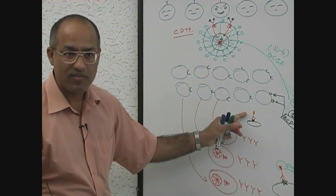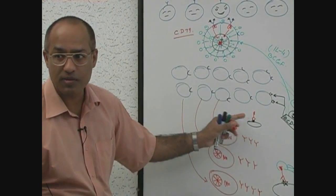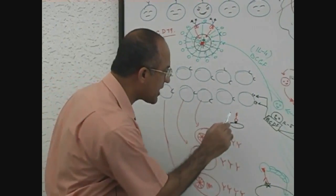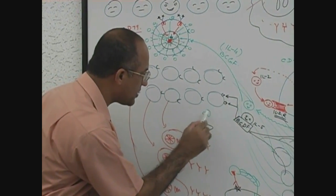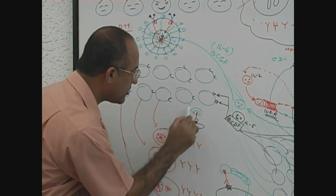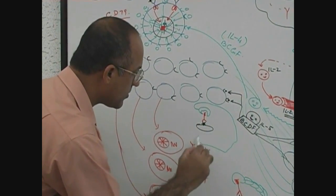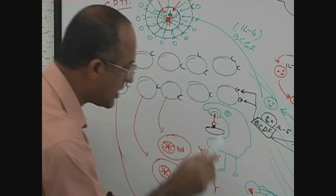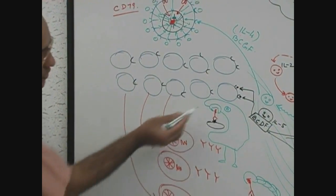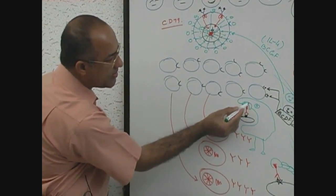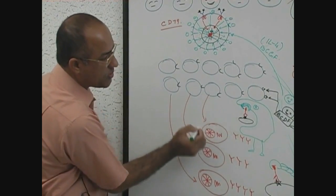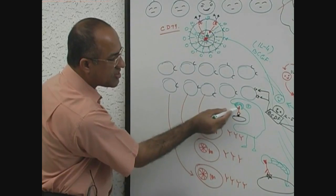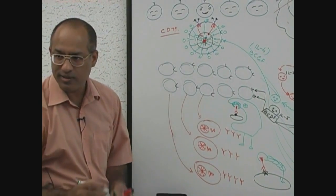Activated antibodies have receptors on the neutrophils and macrophages. Some neutrophils may come over here, and on the neutrophil surface there is a receptor for the activated antibody. So the antibody on one side is holding the bacteria, and on the other side it is sticking to the neutrophil.